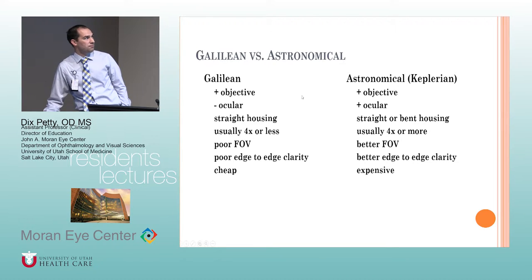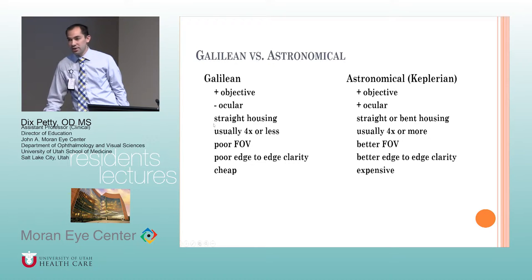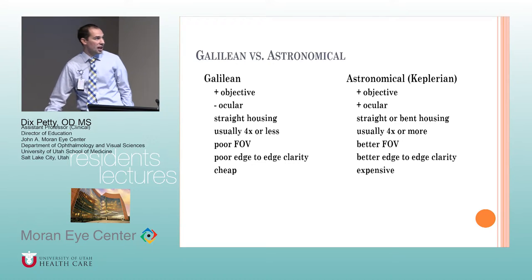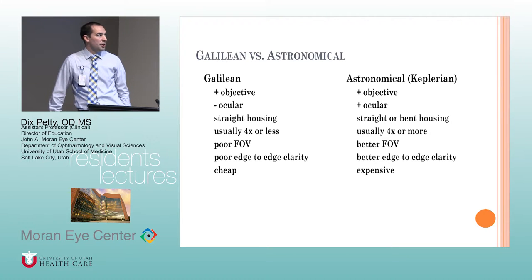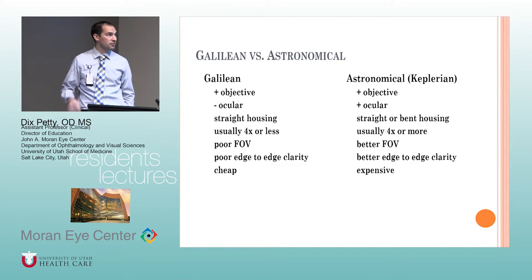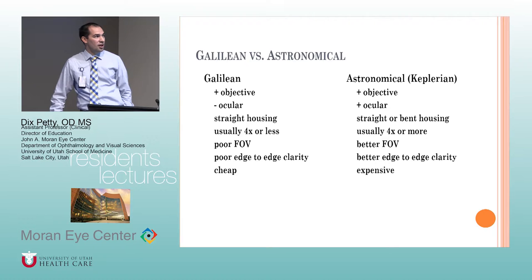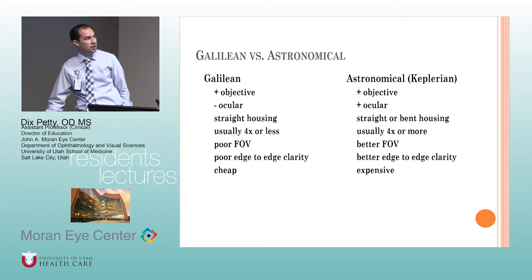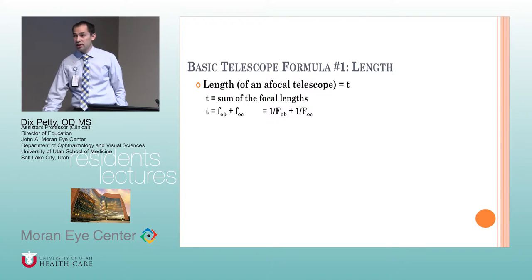Summary comparison: Galilean has a plus objective and minus ocular, straight housing, usually 4x or less, and is cheaper since it's a simple two-lens system. Astronomical has two plus lenses, so it's longer, can be straight or bent housing, 4x or above, and more expensive if it requires reinverting optics.